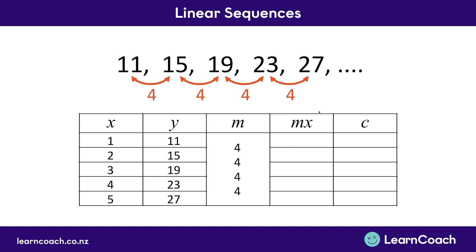Next is the MX column. MX means we take our M number — which in this case is 4 — and multiply it by our X value. So in the first row, 1 times 4 gives us 4. Then 4 times 2 is 8, 4 times 3 is 12, 4 times 4 is 16, and 4 times 5 is 20.